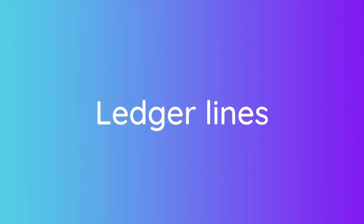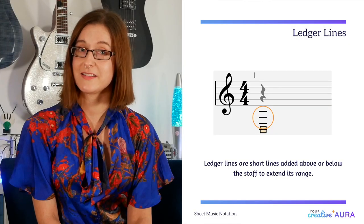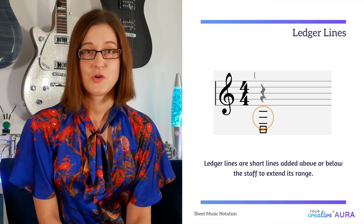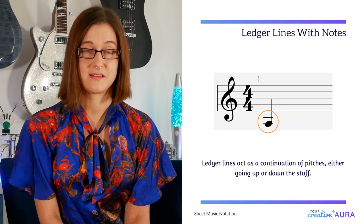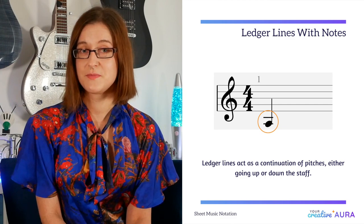Next we move on to ledger lines, which is a short line added above or below the range of the staff. It helps us identify the pitch of the note if it goes beyond the usual structure of the basic staff, which is five lines and four spaces. It looks like this. These short ledger lines attach themselves to individual notes that exceed the basic staff, and they attach themselves like this.